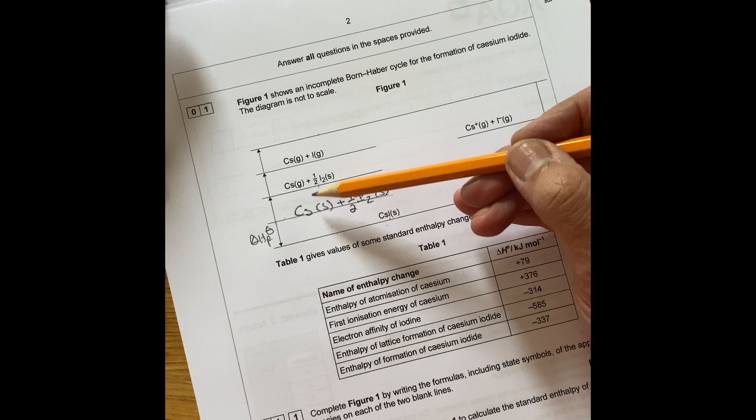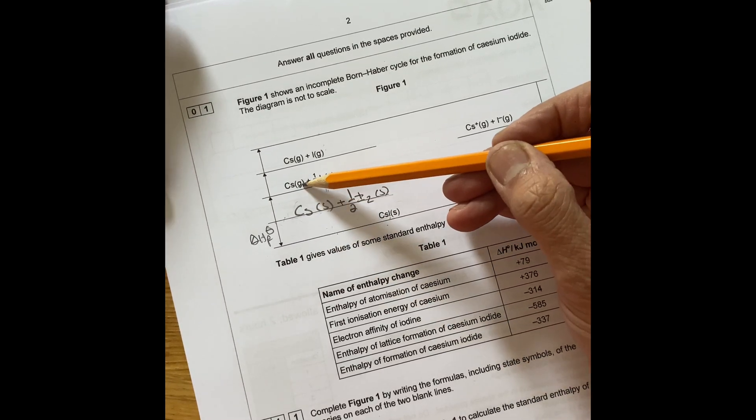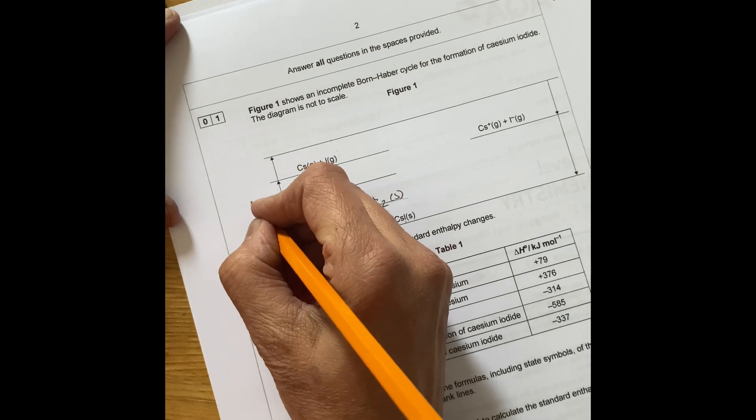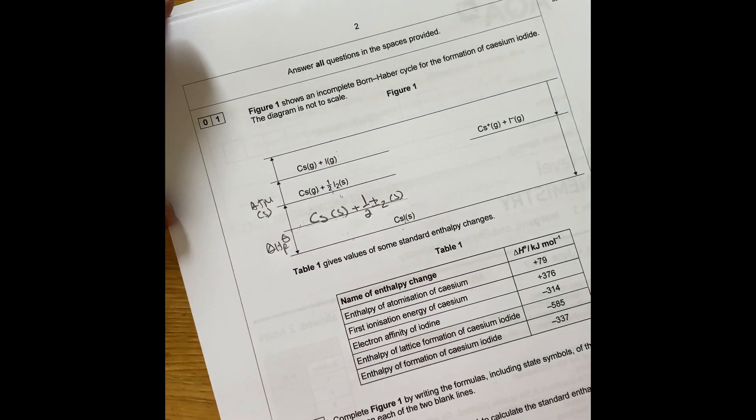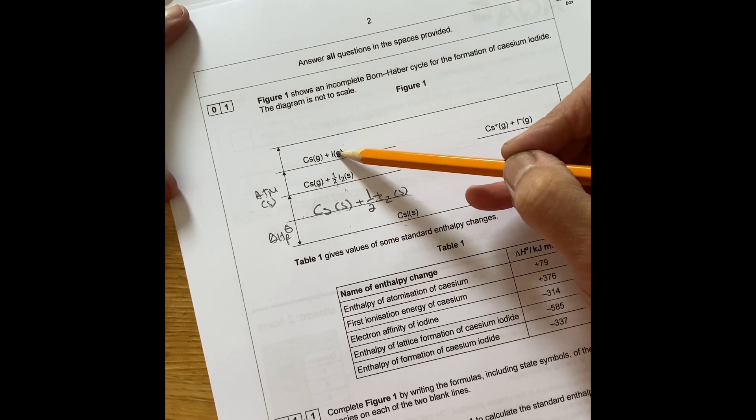Then if you go from here to here, you'll see that cesium solid changed to gas. So that's atomization of cesium happening there. So that's atomization of cesium. And then for the next one, you've got atomization of iodine.